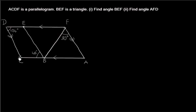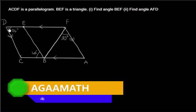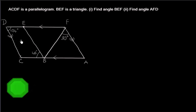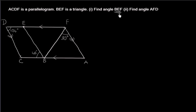To recap: angle CDE is 104 degrees, angle CBE is 46 degrees, and angle BFA is 30 degrees. Since ACDF is a parallelogram, opposite sides are parallel. Let us first find angle BEF.